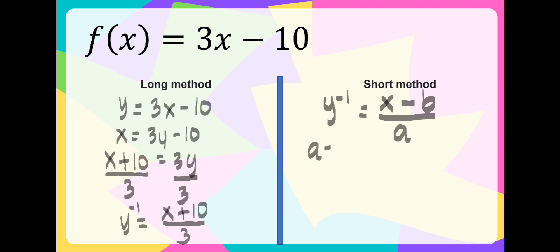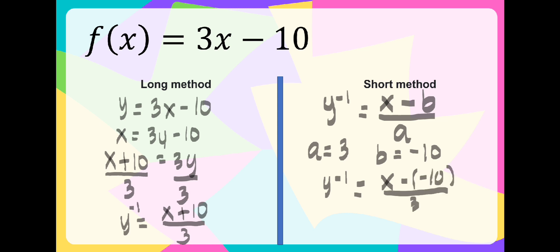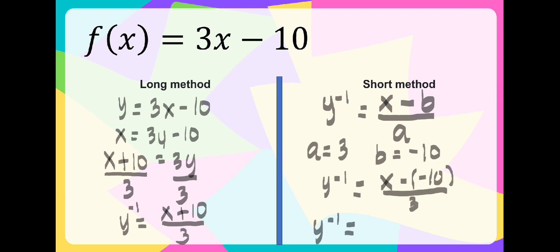Here in the given, a is equal to 3 and b is equal to negative 10. Now let us substitute those values in the given formula. We have f inverse equal to x minus negative 10 over 3, which gives us x plus 10 over 3. So as you can see, they are the same.